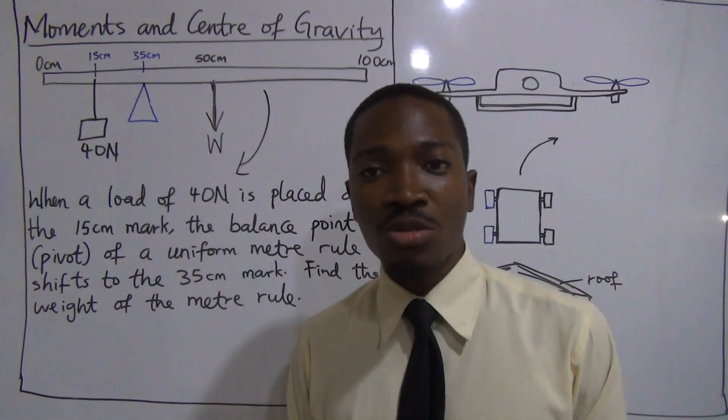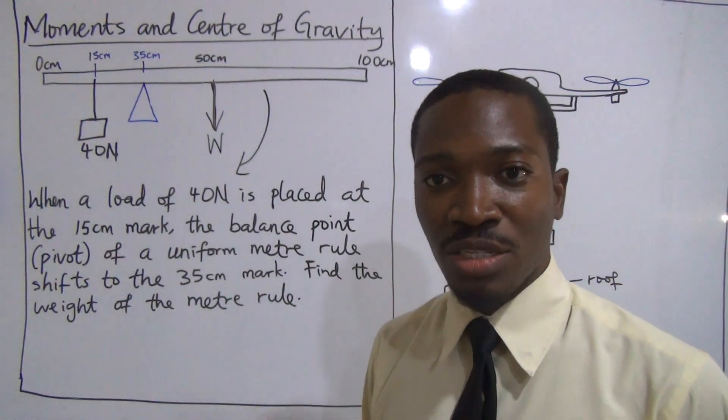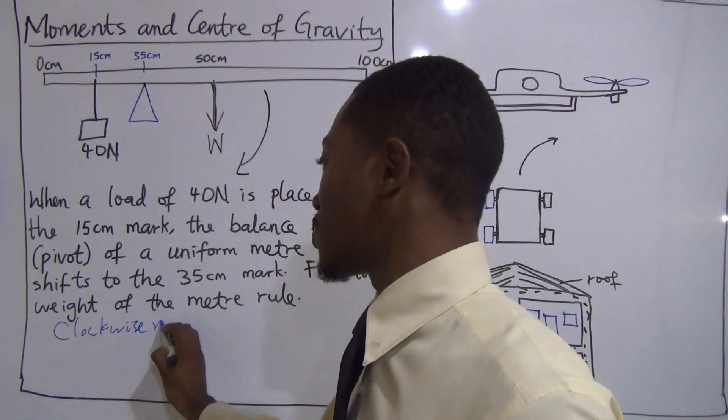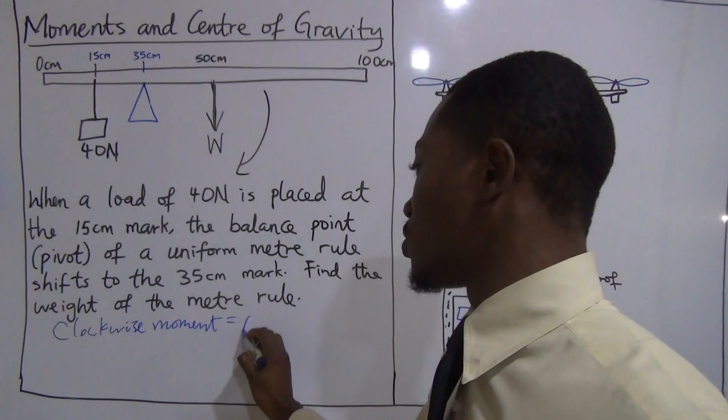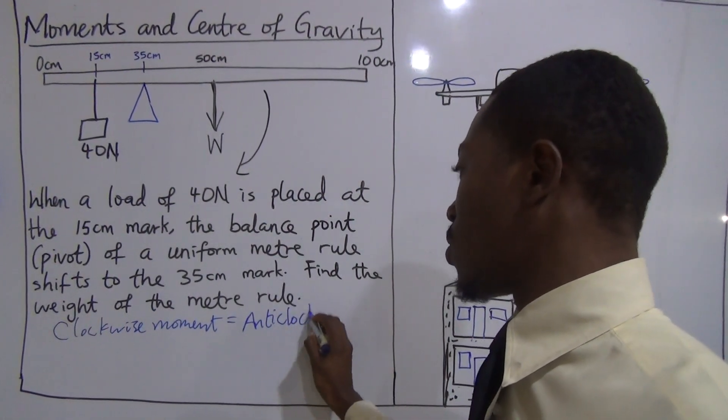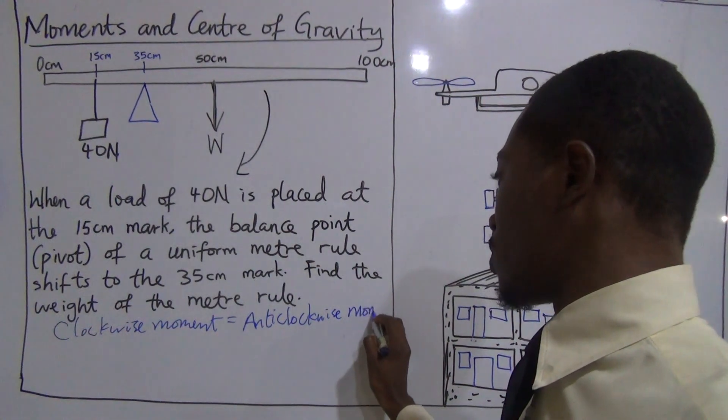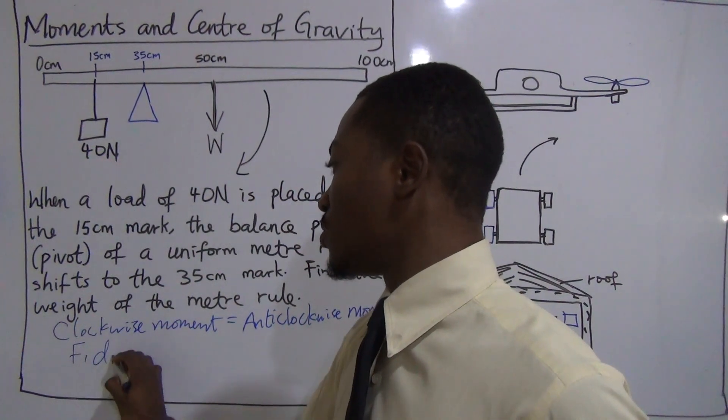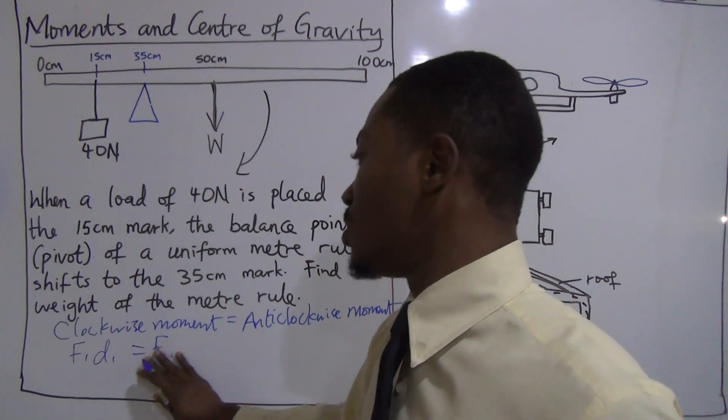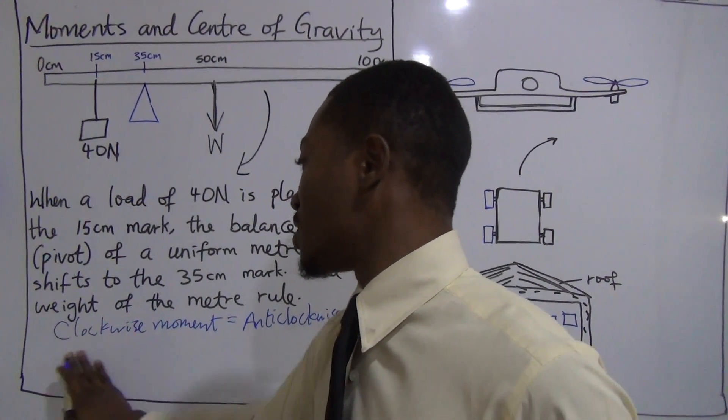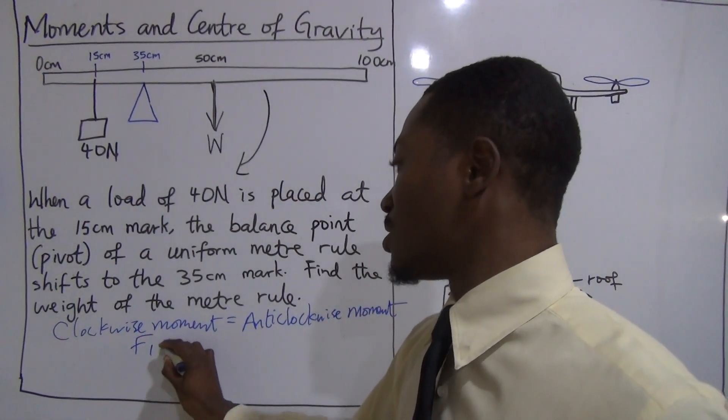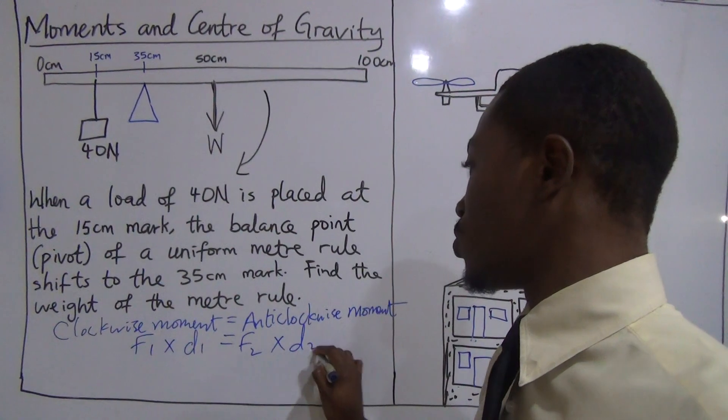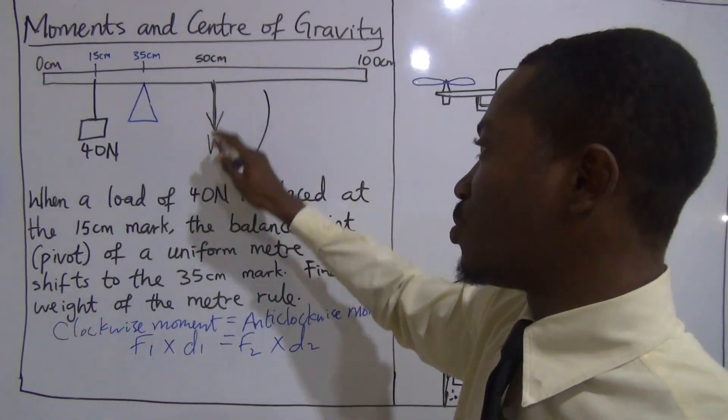The logic is the same. The total clockwise moment must be equal to the total anti-clockwise moment. What's the formula for the clockwise moment? You always use F1×D1 equals F2×D2.